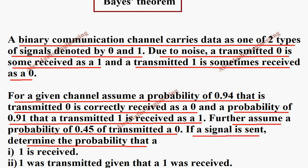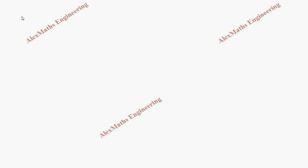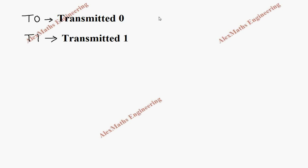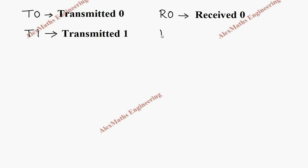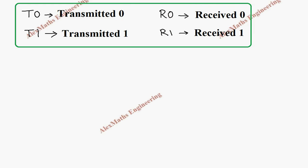Before that, we see from the question the signals: transmitted 0 and transmitted 1, and received 0 and received 1. We denote transmitted 0 as T0, transmitted 1 as T1, received 0 as R0, and received 1 as R1. This naming is very important for understanding better and to proceed in an easier way.